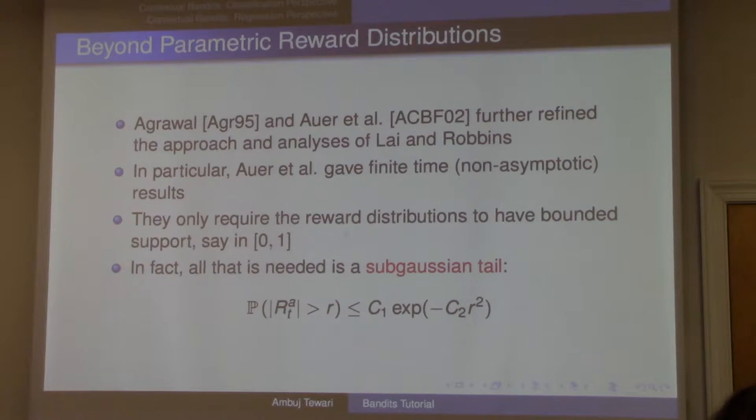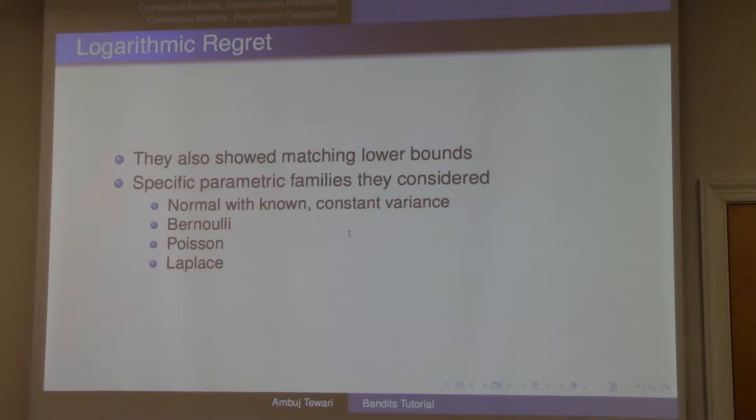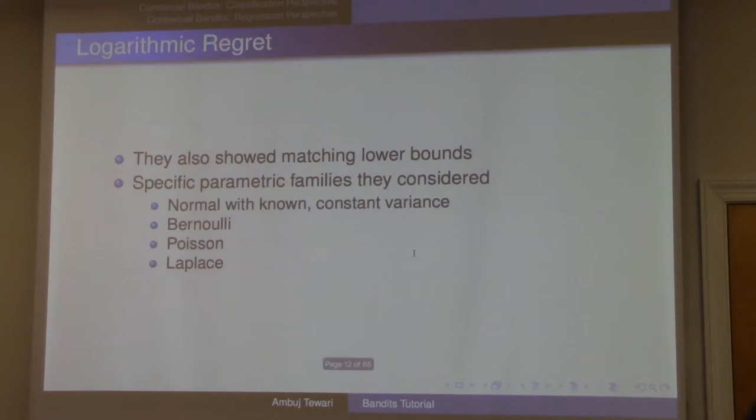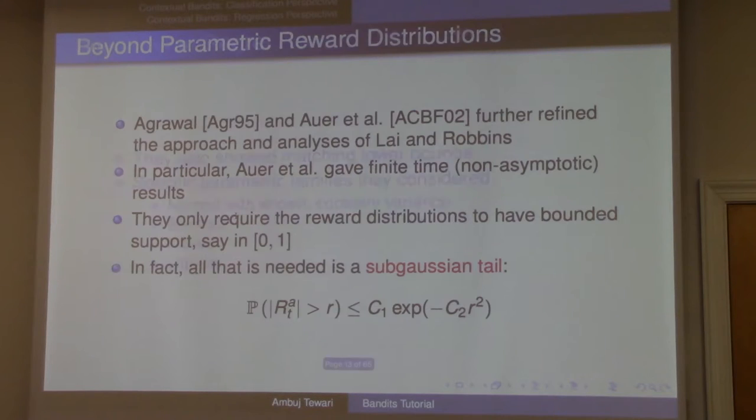Following up on some work in electrical engineering by Agrawal, who further simplified the algorithm and analysis of Lai-Robbins, in 2002 a bunch of computer scientists, Peter Auer and company, they pretty much simplified the algorithm and analysis and also made the assumptions as general as they can possibly be. So in 2002 this algorithm just called UCB came out.